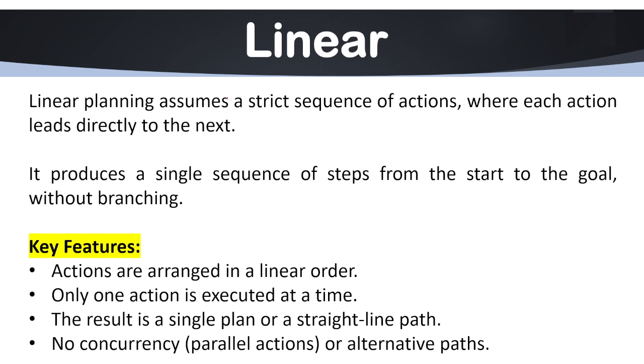So as we all know, linear planning is nothing but a planning that flows on a straight line. This is the basic working of linear planning. Basically, it is a planning in which all the actions we are going to take are always organized in a strict and totally ordered sequence. As you can see here, linear planning assumes a strict sequence of actions where each action leads directly to the next. Each action has exactly one predecessor and one successor, and this plan flows in a straight line from its initial state to the goal state.